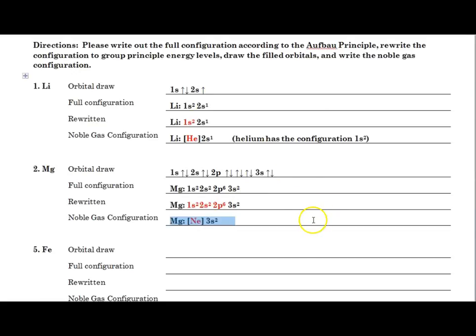So then rewriting it in noble gas configuration, we'll see that we will substitute these sub levels that are written in red here, 1s2, 2s2, 2p6, substitute that for neon, which has atomic number 10. And again, then write just what comes after neon. Since neon has 1s2, 2s2, 2p6, what's left is what's written up here, 3s2. So we put the 3s2 after the neon. And that is what the noble gas configuration would look like for magnesium.